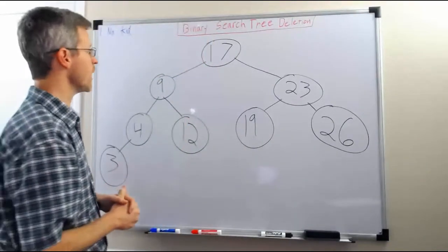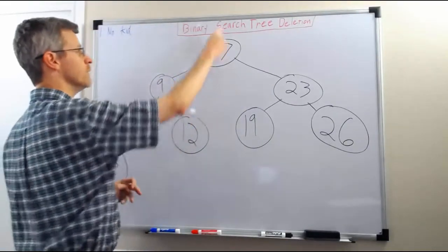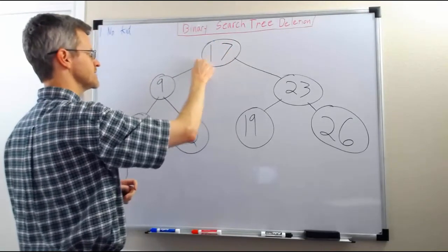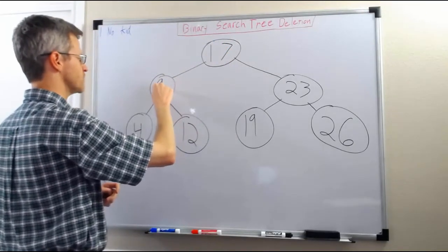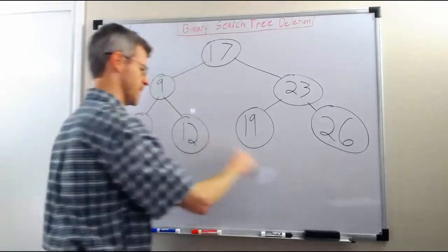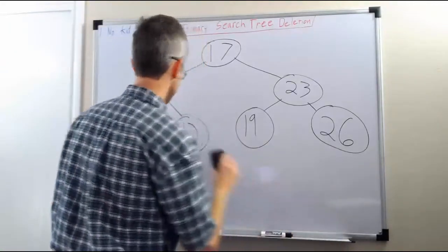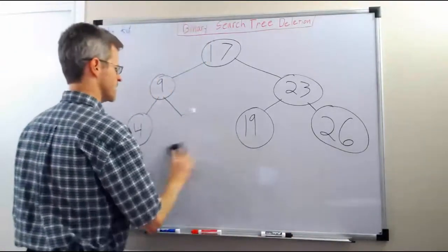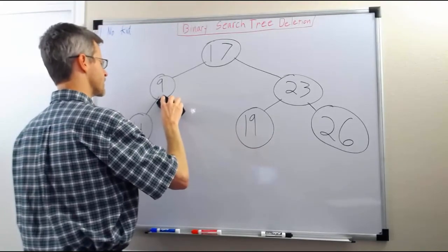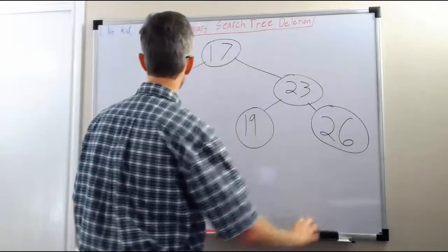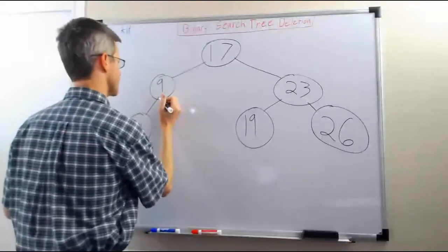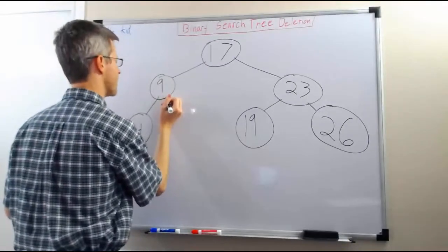For example, if we want to delete the node 12, we come down and find 12. So 12 is less than 17, 12 is greater than 9, and 12 is here. And to delete it, we can just remove that node from the tree and mark the right pointer of 9 as null.